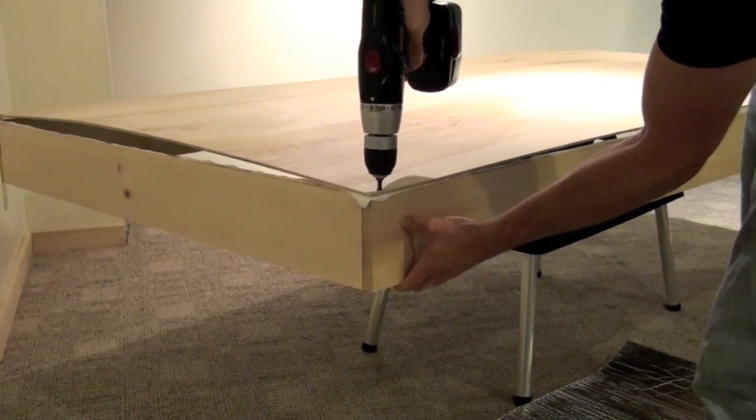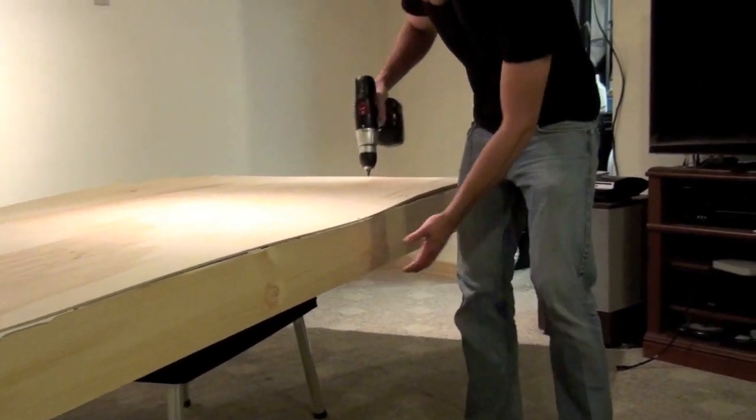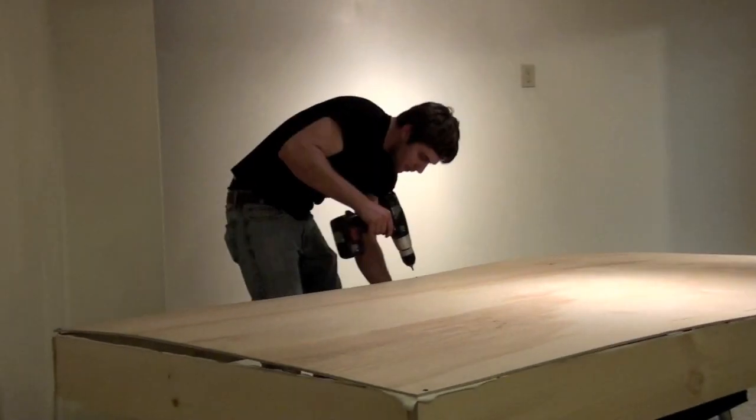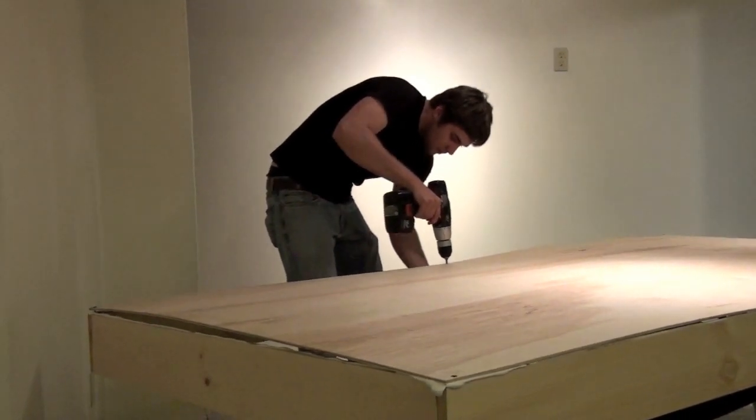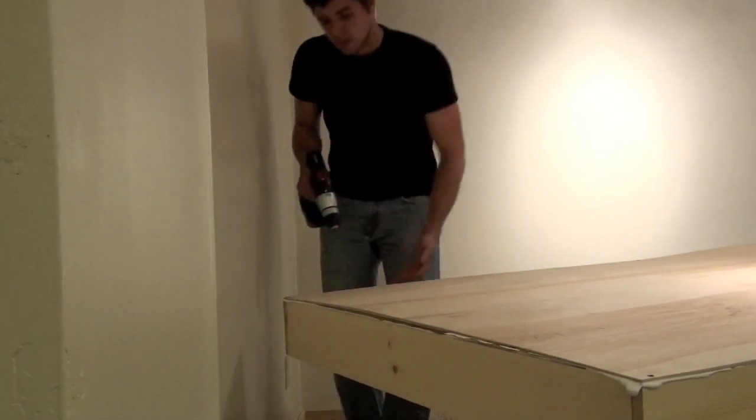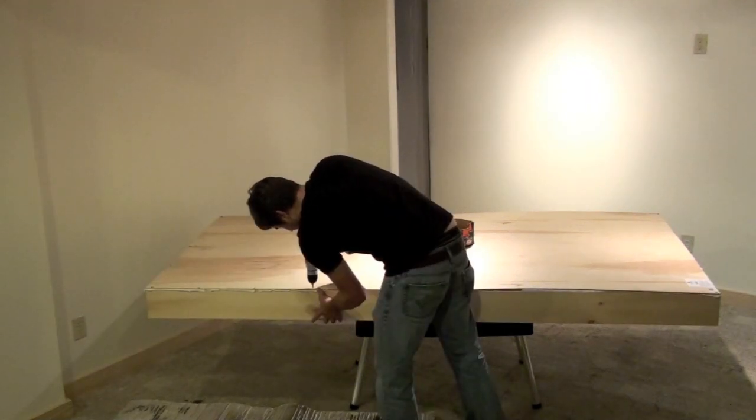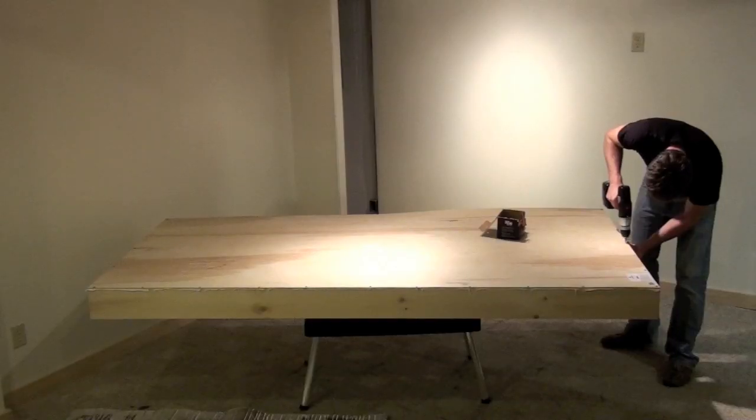Put the screws down tight, and this smashes the caulking out. After we get all six of those screws down, now add a screw about every ten inches around the panel.